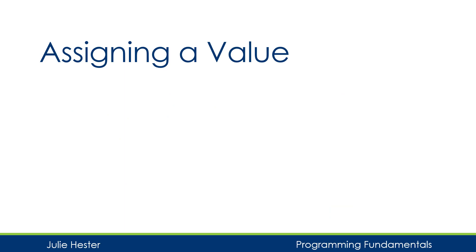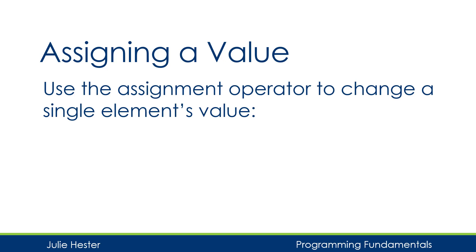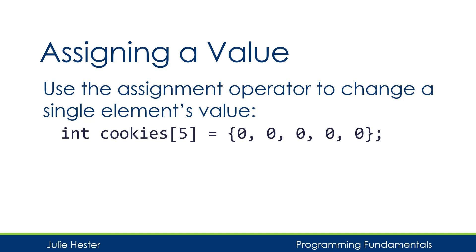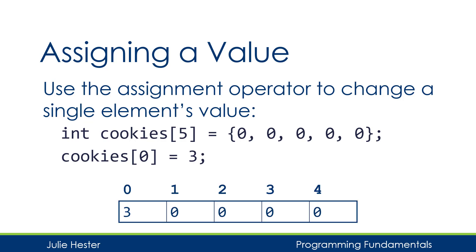Just like I access a value to see it, if I want to change an element's value, I'm going to use the assignment operator with the subscript number. Here I have a different array named cookies, and it has five values — this time initialized to five zeros. After declaring and initializing this array, I could decide I want to change the value of the first element. I can do this by saying cookies[0] equals 3. Now the value of 3 will be assigned to the first element in the cookies array, and if I could see it in memory, I would see that the first element now has a value of 3 while the other four elements still have a value of 0.